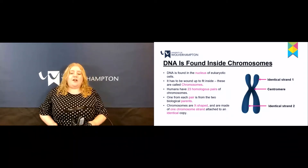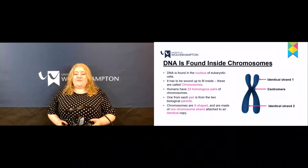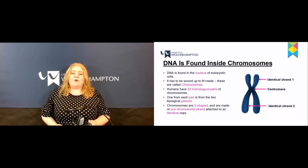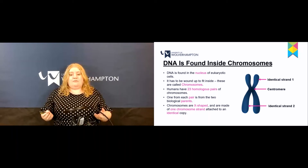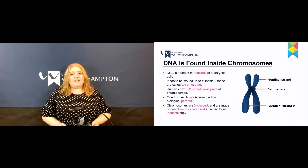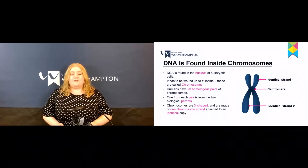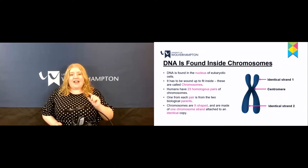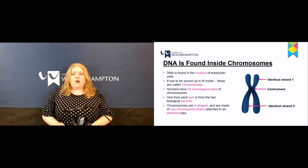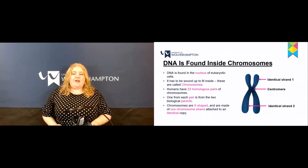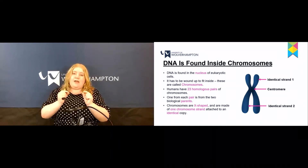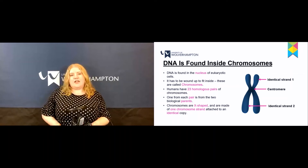DNA is found within the nucleus of eukaryotic cells, and it therefore has to be wound up really tightly to fit inside. This is called supercoiling and the resulting structure is called a chromosome. Humans have 23 homologous pairs of chromosomes, and one from each pair is from the two biological parents. Chromosomes are X-shaped and are made of one chromosome strand which is then attached to a central copy with an attachment called the centromere.